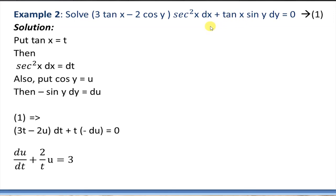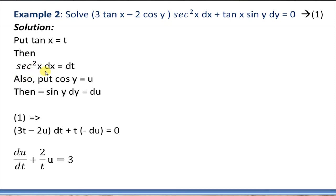Let's take up this differential equation: (3tanx - 2cosy)sec²x dx + tanx·siny dy = 0. Here we observe that tanx is present along with its derivative sec²x·dx, and cosy is present along with its derivative -siny·dy. No other terms contain x or y separately, so we substitute for both tanx and cosy.